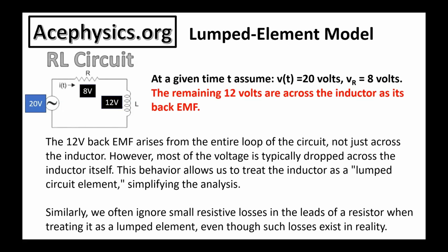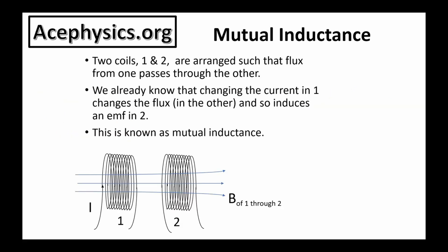This behavior allows us to treat the inductor as a lumped circuit element, simplifying the analysis. Similarly, we often ignore small resistive losses in the leads of a resistor when treating it as a lumped element, even though such losses exist in reality. The full 8 volts is not dropped across the resistor. Some small voltage is dropped across the wires, but we ignore that in the lumped element model.